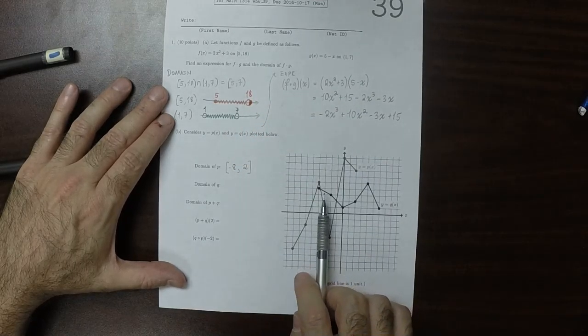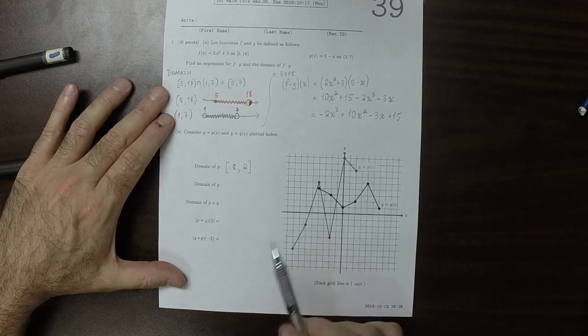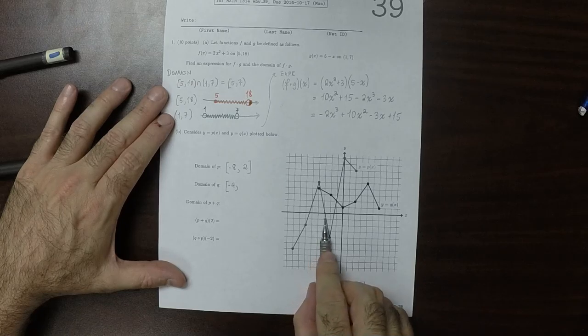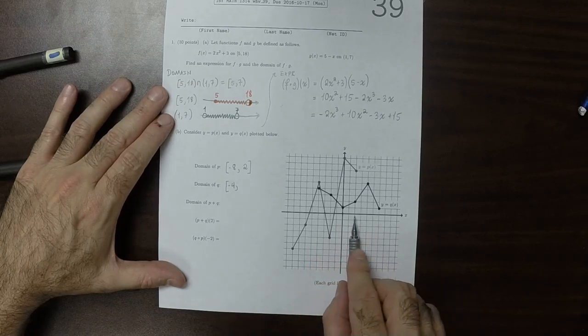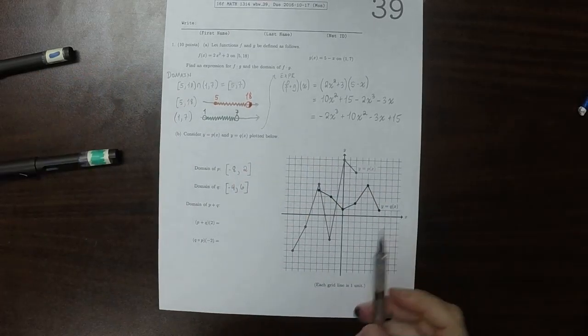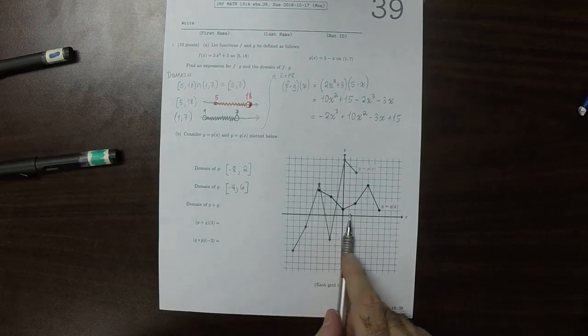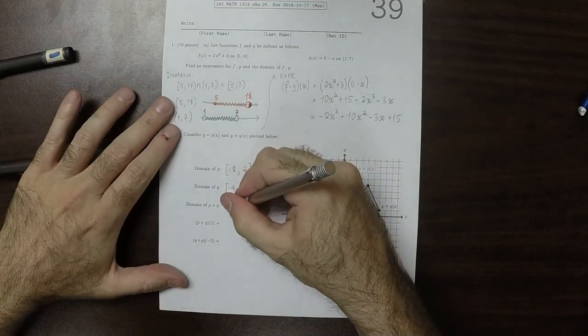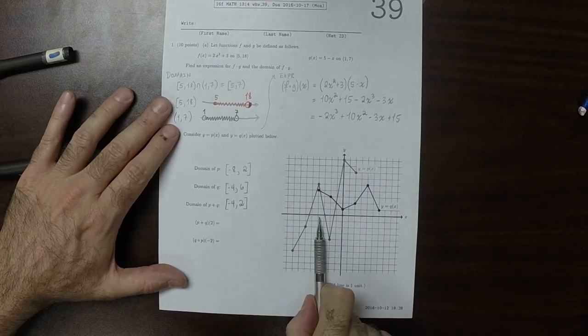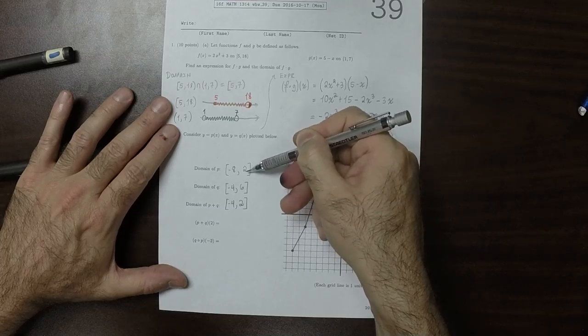So the domain of q is now everywhere we have a black point. So that starts at x is negative 4, and then that proceeds all the way until there, which is 6. The domain of the sum is everywhere that we have a black and also a gray point. So that is from negative 4 to 2. So visually you can see that it is negative 4 to 2, but do also understand that that's the intersection of these two intervals.